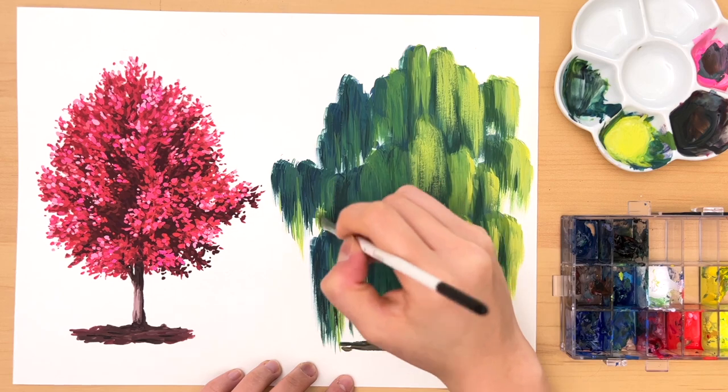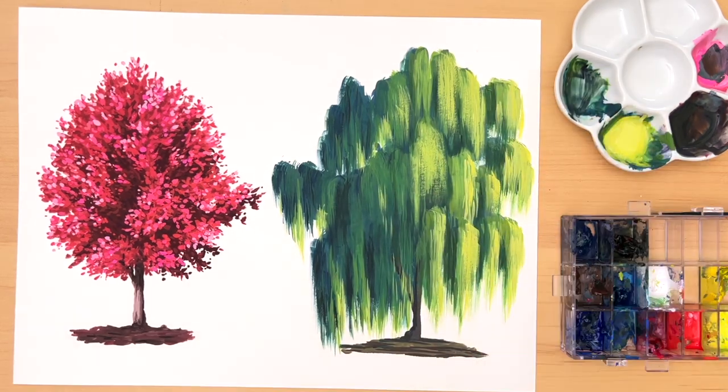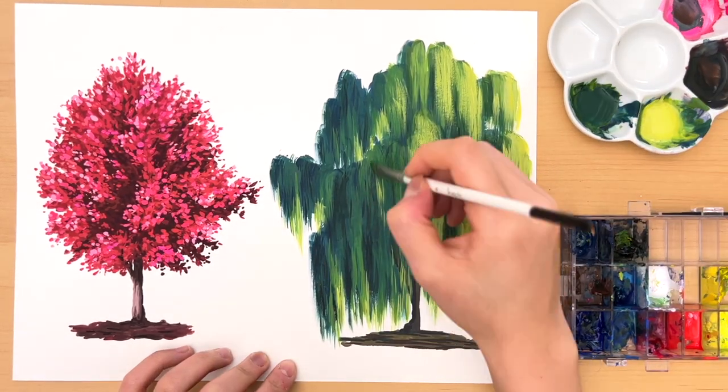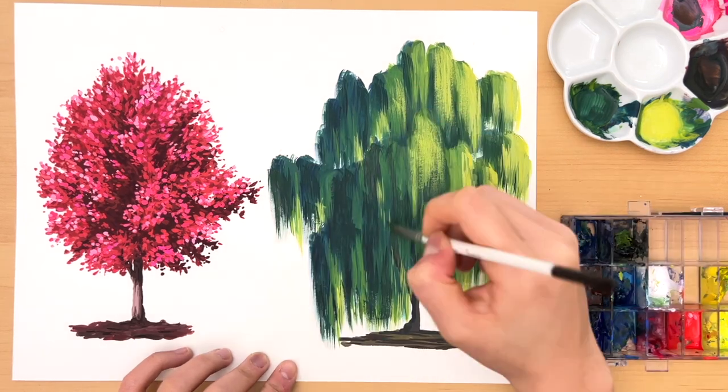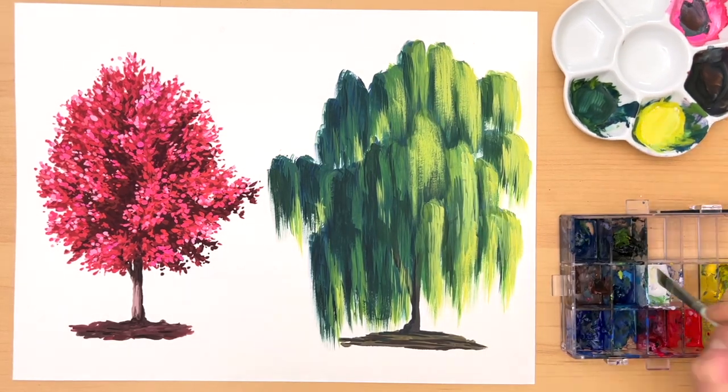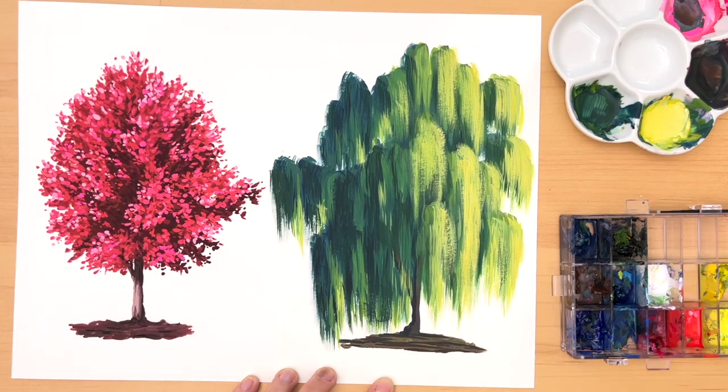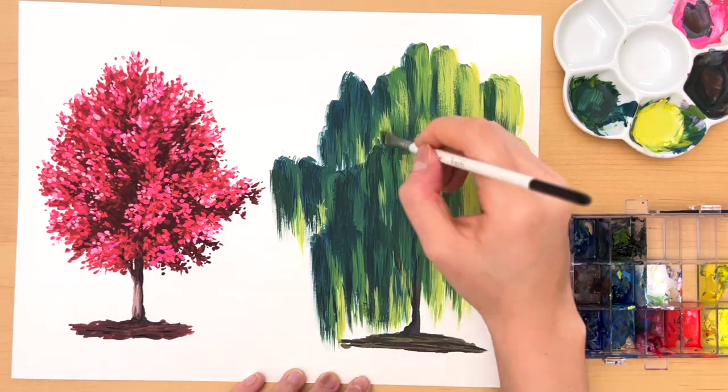Now when your gouache dries, it will dry a different color. The dark area will dry slightly lighter and the light area will dry slightly darker. So make sure you wait for them to dry first, make your judgment on the color, and just repeat this process until you get the contrast you want.